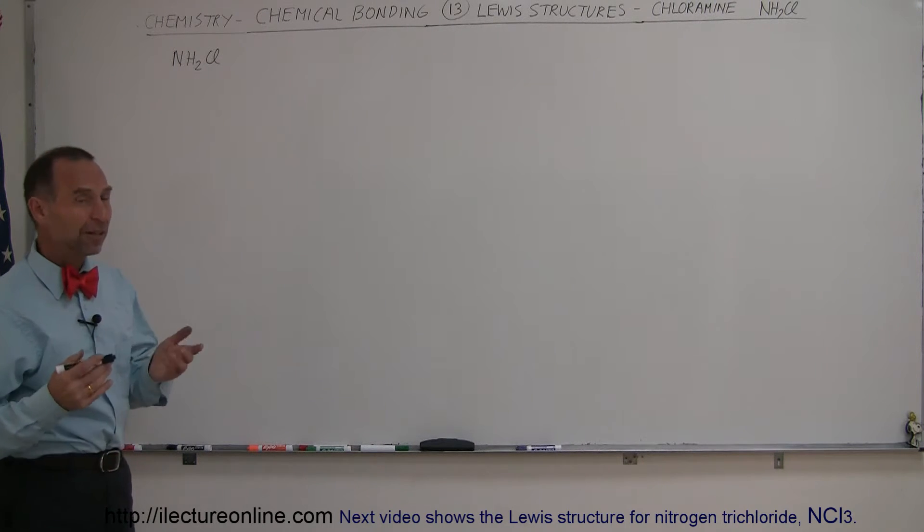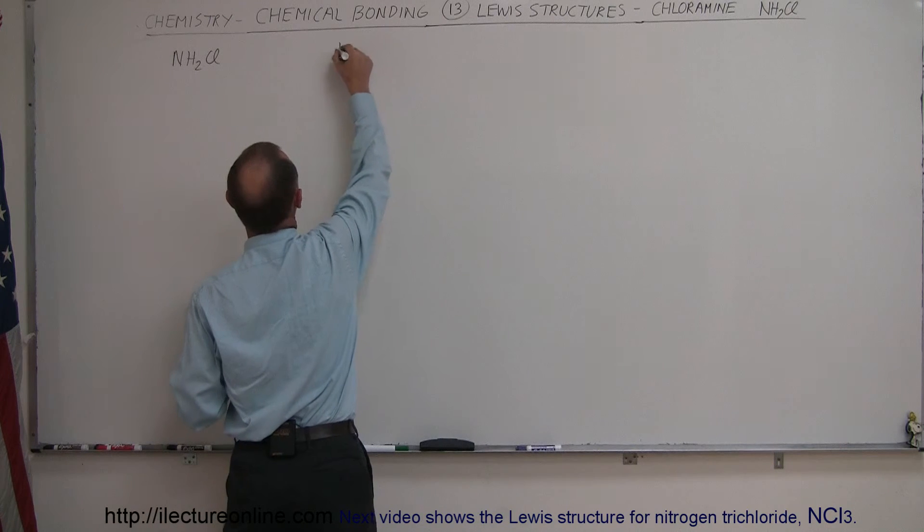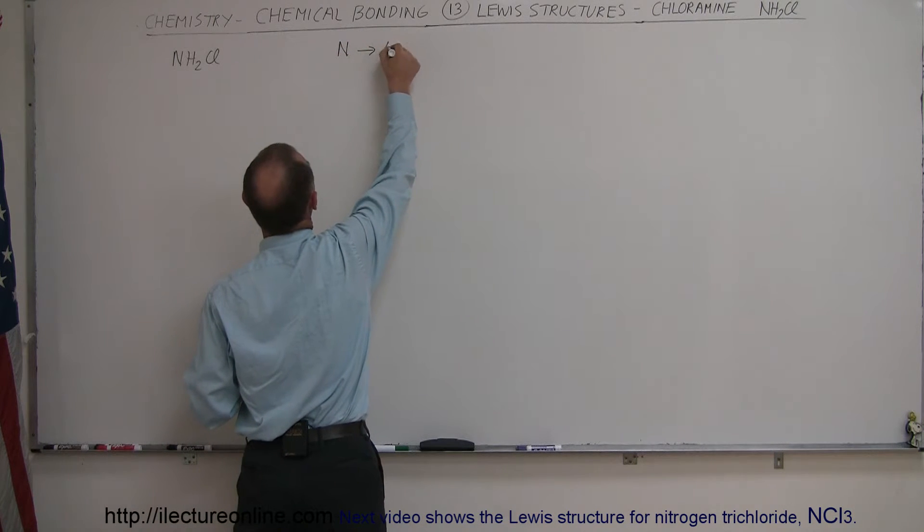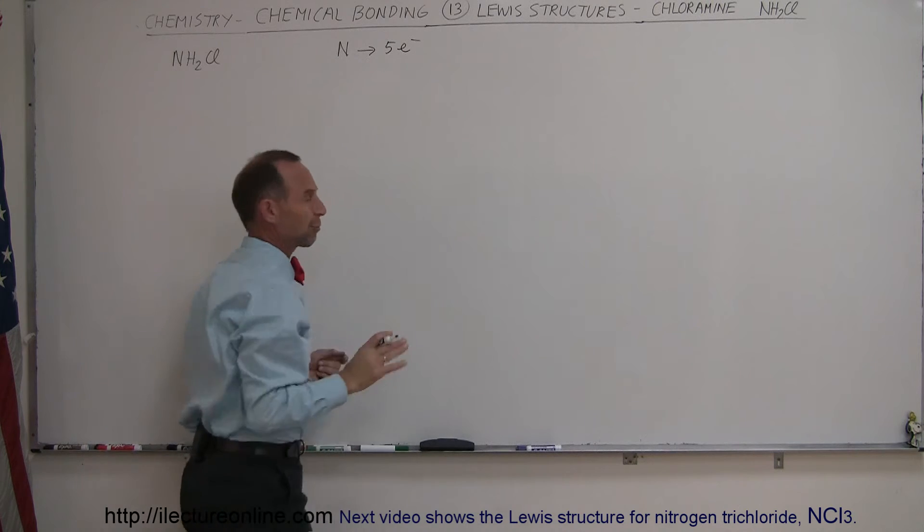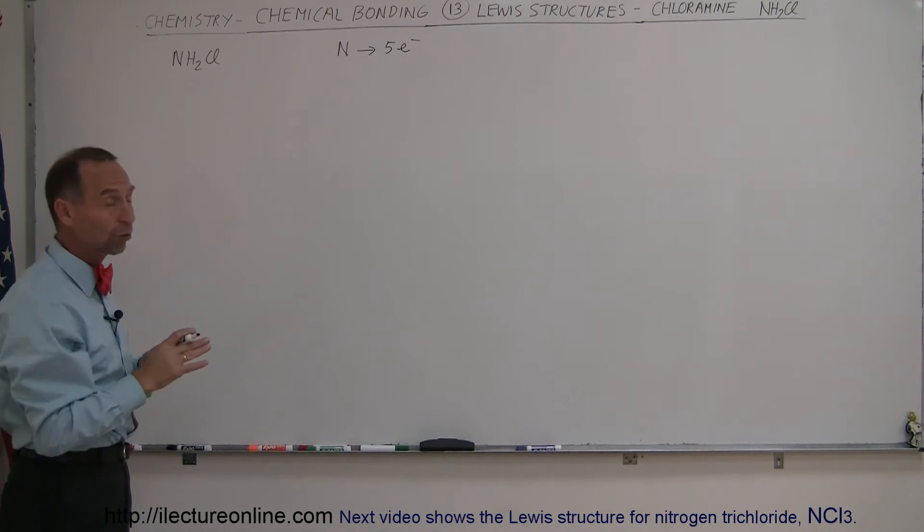Well, first of all, let's find out what kind of atoms we're dealing with. The nitrogen atom has five valence electrons, so we'd like to have three more. It's likely that it's going to make three bonds.